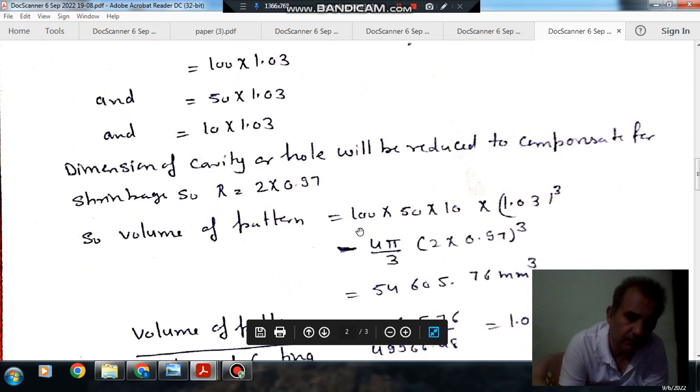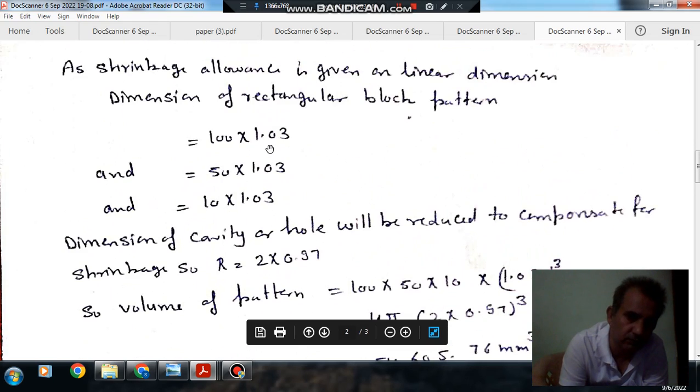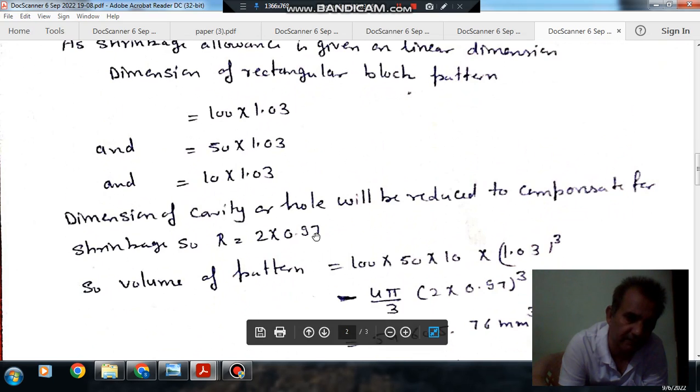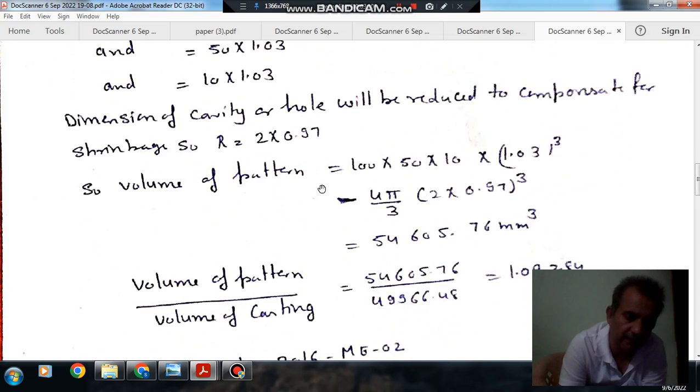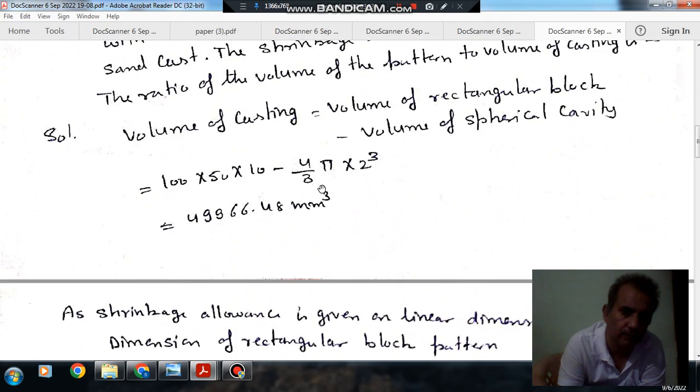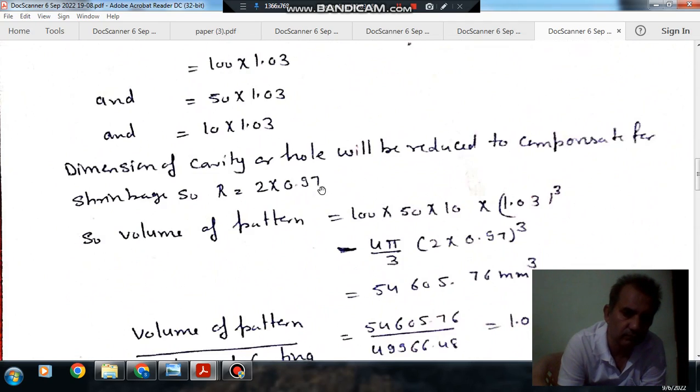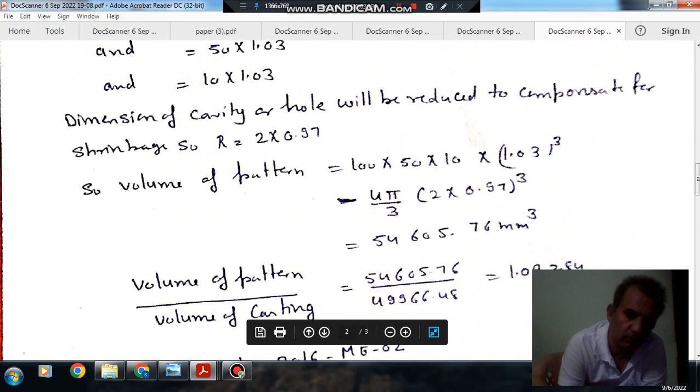The pattern should be given positive allowance when constituting dimensions and when constituting holes should be given negative allowance. That is the main factor in solving this problem. So the answer is 1.09284.